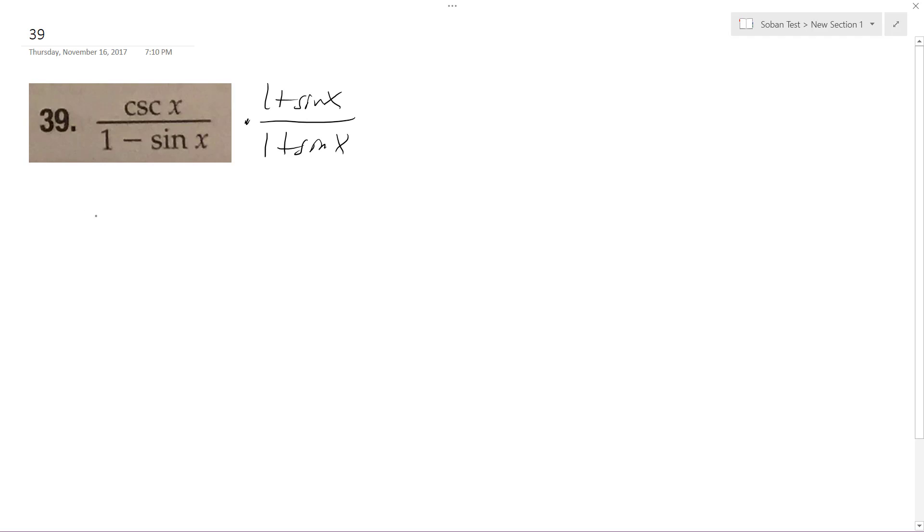So what I get is 1 over sine of x times 1 plus sine of x, and then this becomes 1 minus sine squared x. So I get cosecant x, and I'll just leave it in simple form.